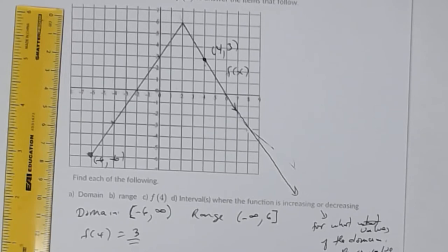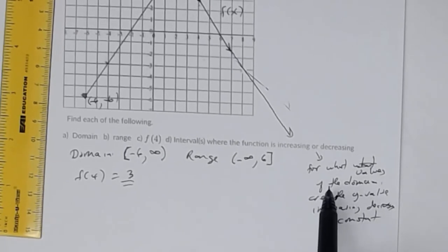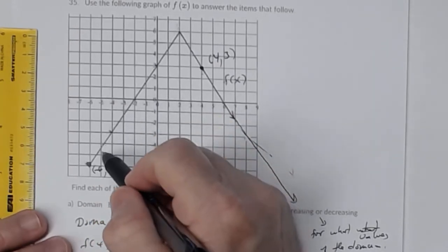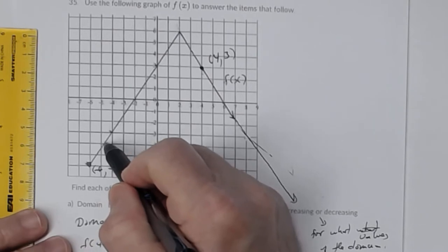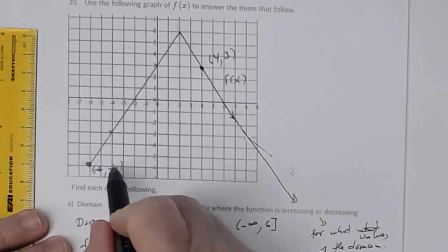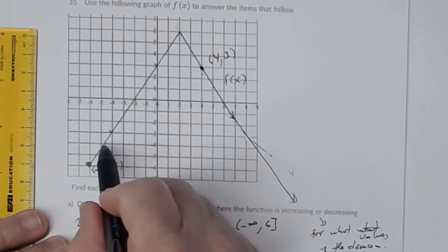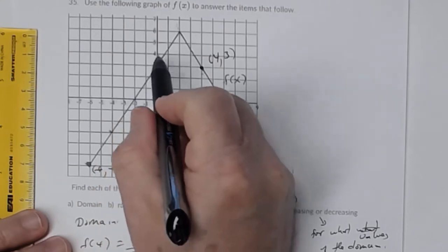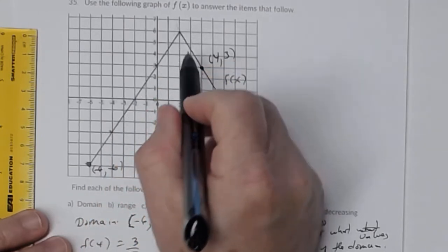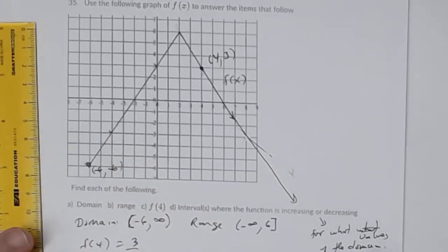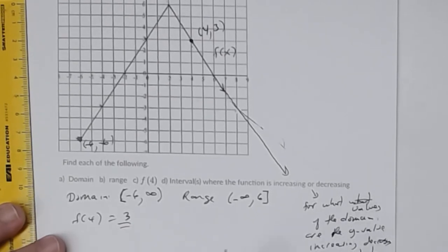Here's where x equals four — the point it corresponds to is right here. Label it: that point is four comma three. Therefore when x is four, my y value is three, so f of 4 equals three. Now let's find the intervals where the function is increasing or decreasing. Remember, you always trace the graph from left to right.